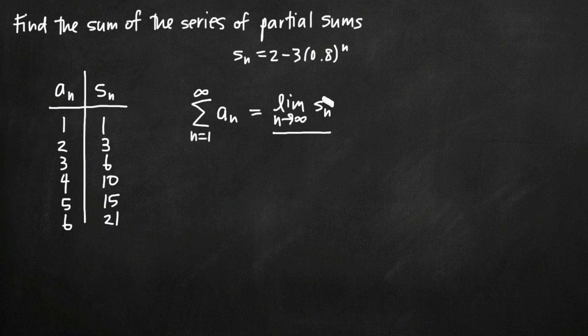So what we're going to be evaluating here is the limit as n goes to infinity of s sub n. Now to do that, in place of s sub n, we can just plug in our equation here. So we'll get the limit as n goes to infinity of 2 minus 3 times 0.8 raised to the n power. Now if we essentially plug in an infinite value here for n, what we find is that this quantity, 0.8 raised to the n power, continues to get smaller and smaller.